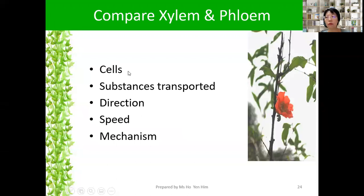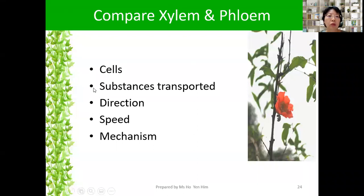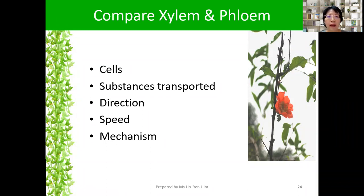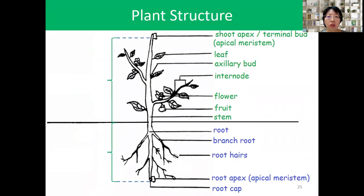After covering the function of xylem vessels, sieve tubes, and companion cells, you need to create a table comparing xylem and phloem cells — substances transported, direction, speed, and mechanism. This will be your homework for next week. At the moment you are unable to answer all these questions yet, but some you can.